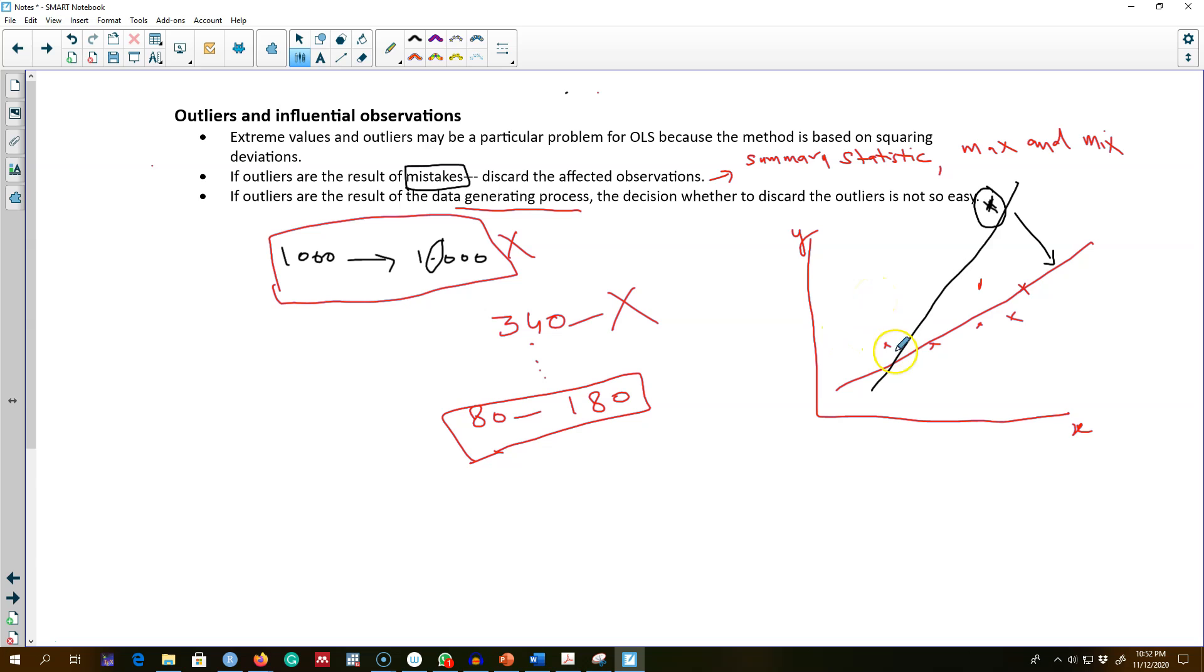On the other hand, if the outlier is a result of the data generating process, then the decision is difficult. In the next video, I'm going to show you an example in R where we'll have an outlier, and I'll show you what happens to the estimates when we include or exclude that outlier from our regression model. Later on, I'll talk about another method of dealing with outliers that is more resilient to outliers.